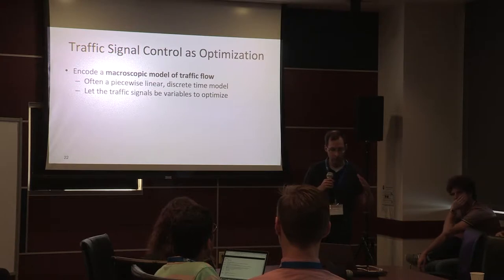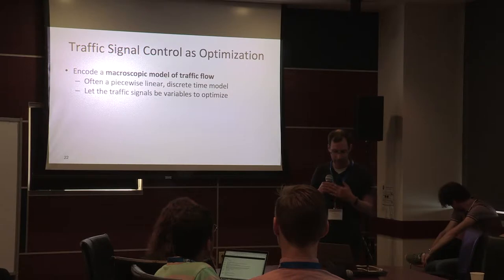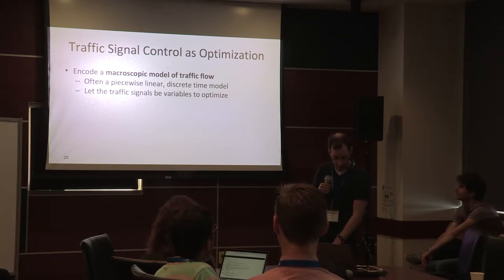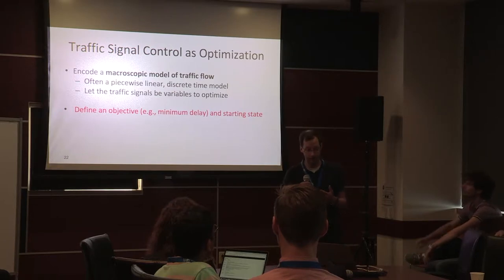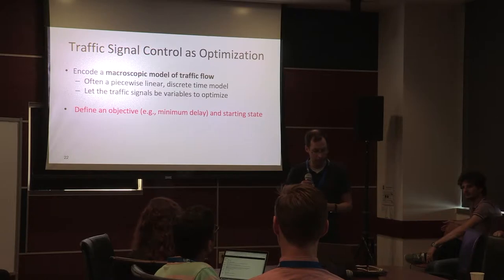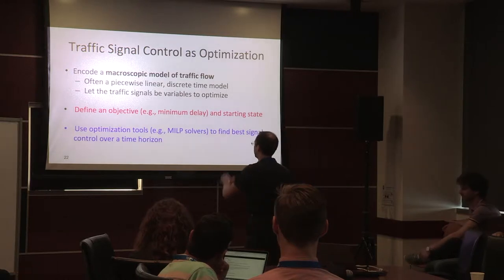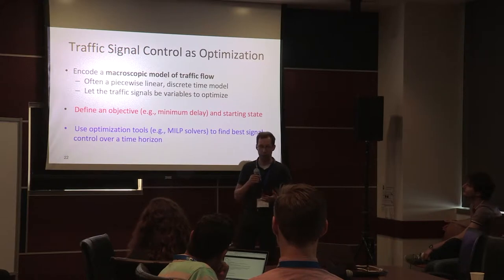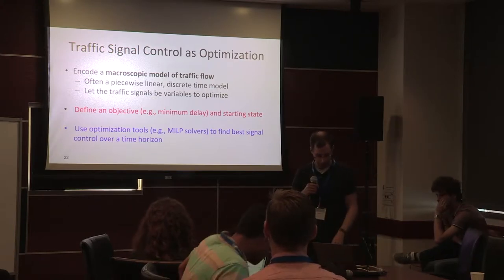We want to set the initial state, set the traffic signals — which we want to optimize later — and then predict over time with some macroscopic model. Macroscopic means looking at counts of cars, not individual cars, to predict counts at all intersections over time. We want to optimize some objective — in this case minimizing delay, though you could also minimize stops, emissions, and other things. Since many variables are continuous, we use not SAT solvers but MILP — mixed integer linear program solvers.